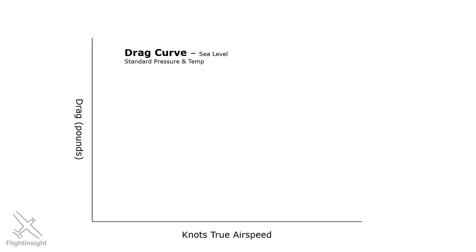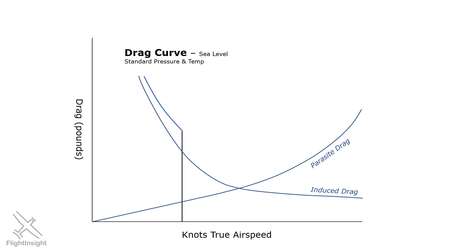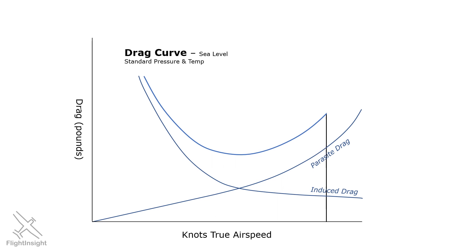We determine these speeds by plotting out aircraft performance. For VX, we're looking at drag. An aircraft's drag is a combination of parasite drag, which increases at higher speeds, and induced drag, which decreases at high speeds. These combine to create a total drag curve that's U-shaped with a minimum point at the bottom.